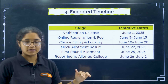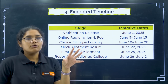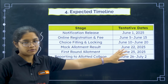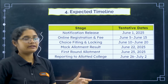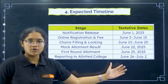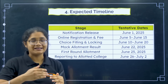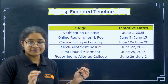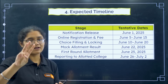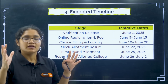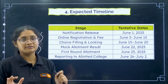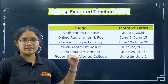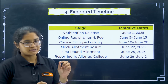After choice filling is done, one mock allotment will take place — showing which college and branch you are getting based on what you filled. Then there is a first round allotment. After the mock round, you get a chance to change your choice entry, and then a final allotment takes place, after which you have to report to the college. The allotment takes place in two or three rounds — students who did not get a seat in the first round go to the second and third round. I will make a detailed video on these rounds separately.